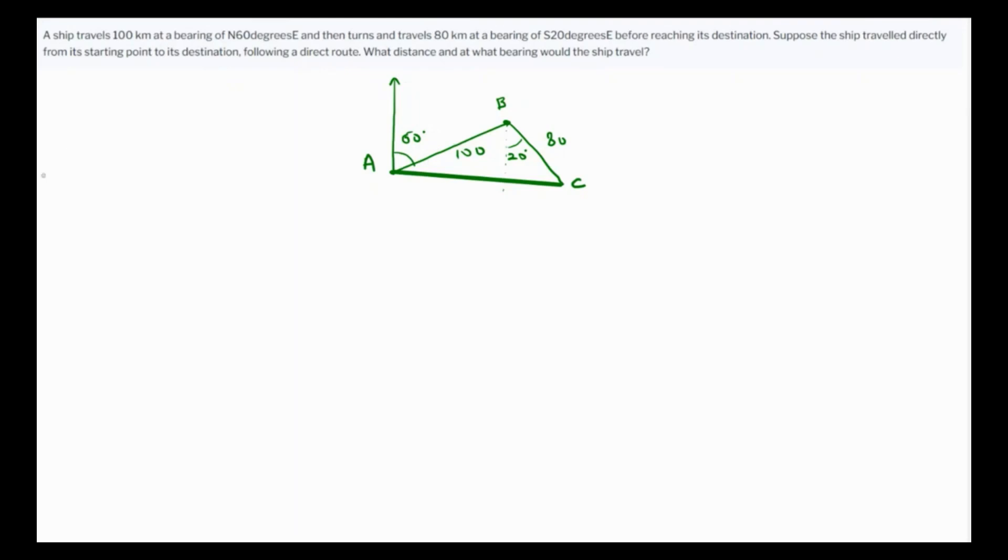Look carefully that these two sides are parallel and this is a transversal, so definitely this angle will also be 60 degrees because they are alternate interior angles. This angle alpha is also going to be 60 degrees because of the alternate interior angles.